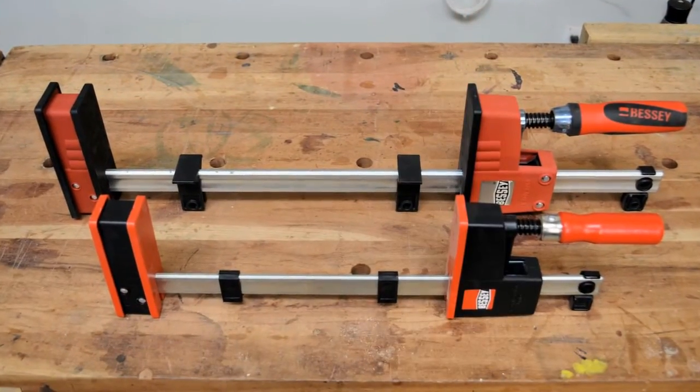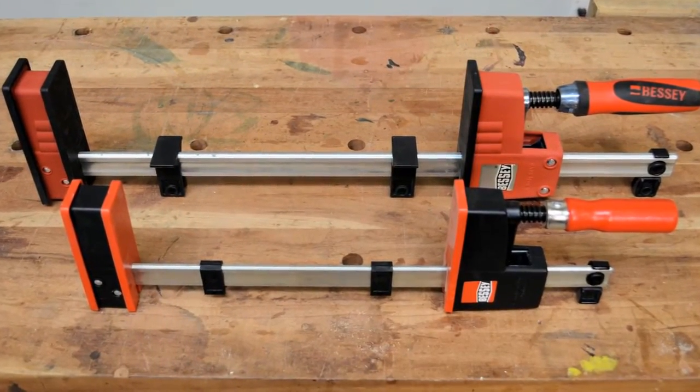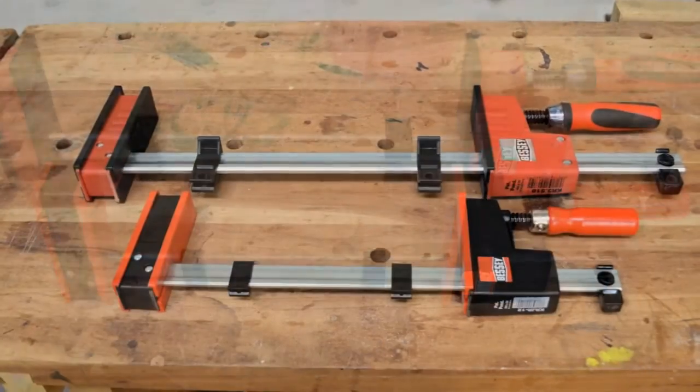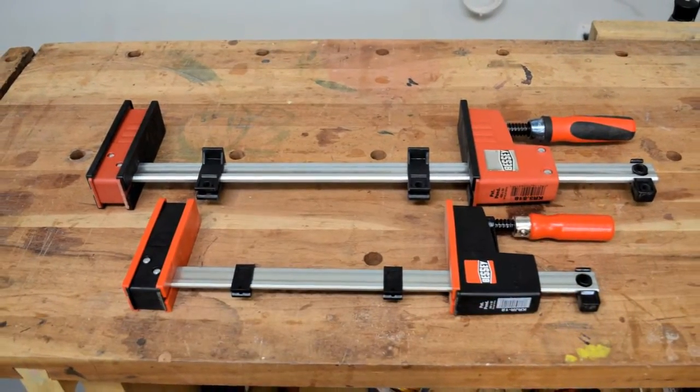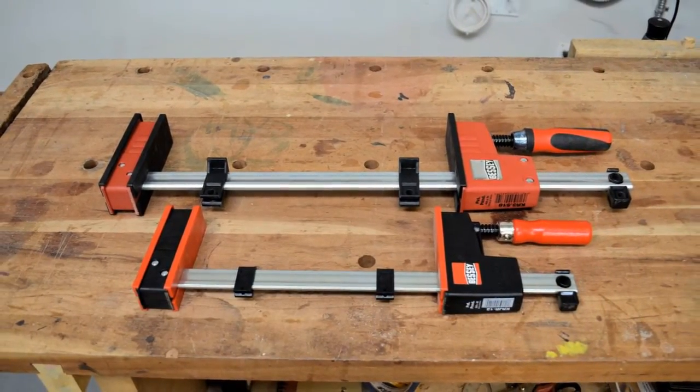Just like the larger Revo K-body clamps, they feature an end clip and two rail protection pieces to help align your project and keep glue off the rail.